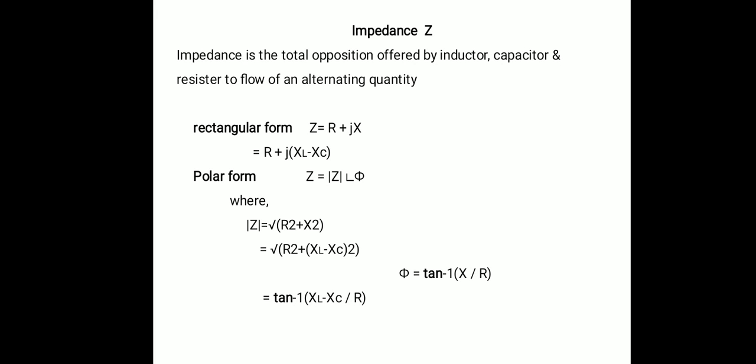Now we are going to see the next topic which is the impedance Z. So what is impedance? Impedance is the total opposition offered by inductor, capacitor and resistor to flow of an alternating current. So if we connect these three components in the AC circuit — resistor, capacitor and inductor — and all of them start opposing the flow of alternating current, that amount of opposition is called the impedance Z.